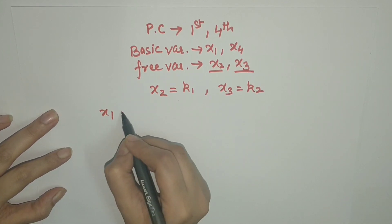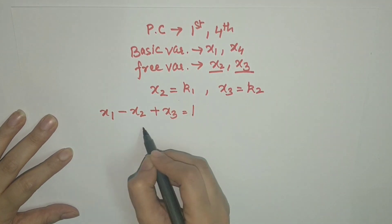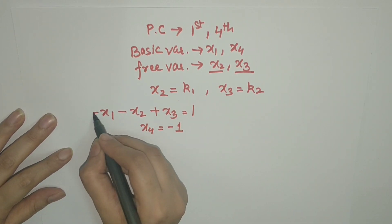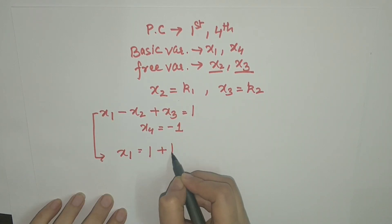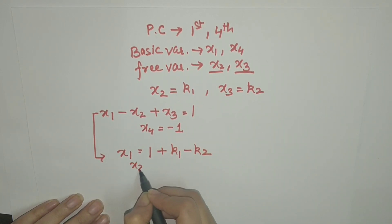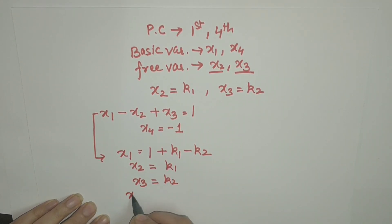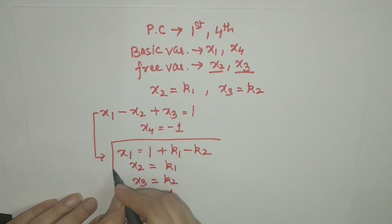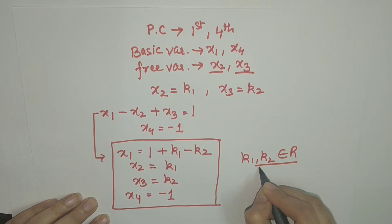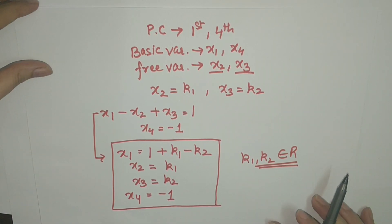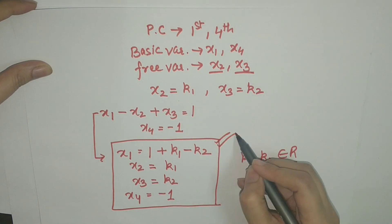From the system x1 - x2 + x3 = 1 and x4 = -1, substituting x2 = k1 and x3 = k2, we get: x1 = 1 + k1 - k2, x2 = k1, x3 = k2, x4 = -1. This is the solution to the given system, where k1 and k2 are arbitrary real numbers. Note that the system has infinitely many solutions.